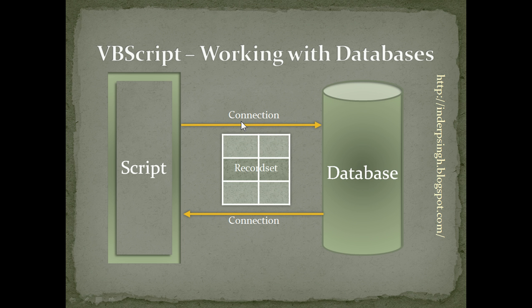What is the Connection? A Connection is basically an object that connects the script to the database. When the connection is open, we can execute commands on the database and also fetch data from the database. In addition to the Connection, we can have the RecordSet object. The RecordSet object is a copy of the result set that we can get from the database.